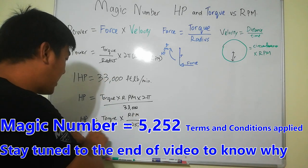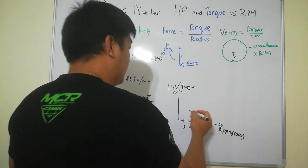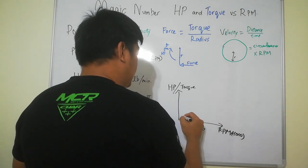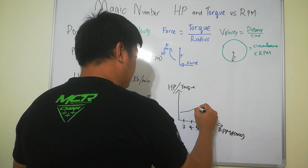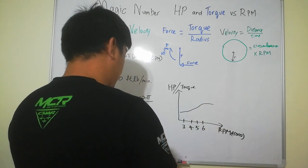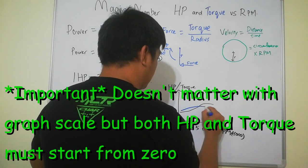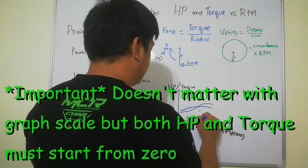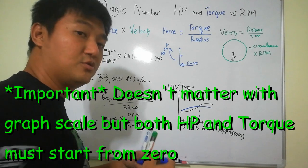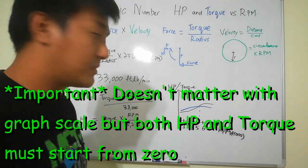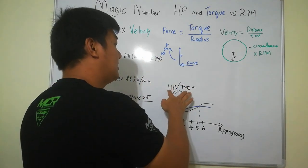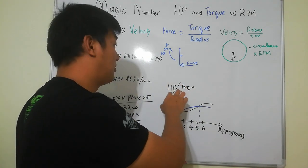So for example this one is the horsepower and this one is the torque. It intersects at 5,252 RPM.